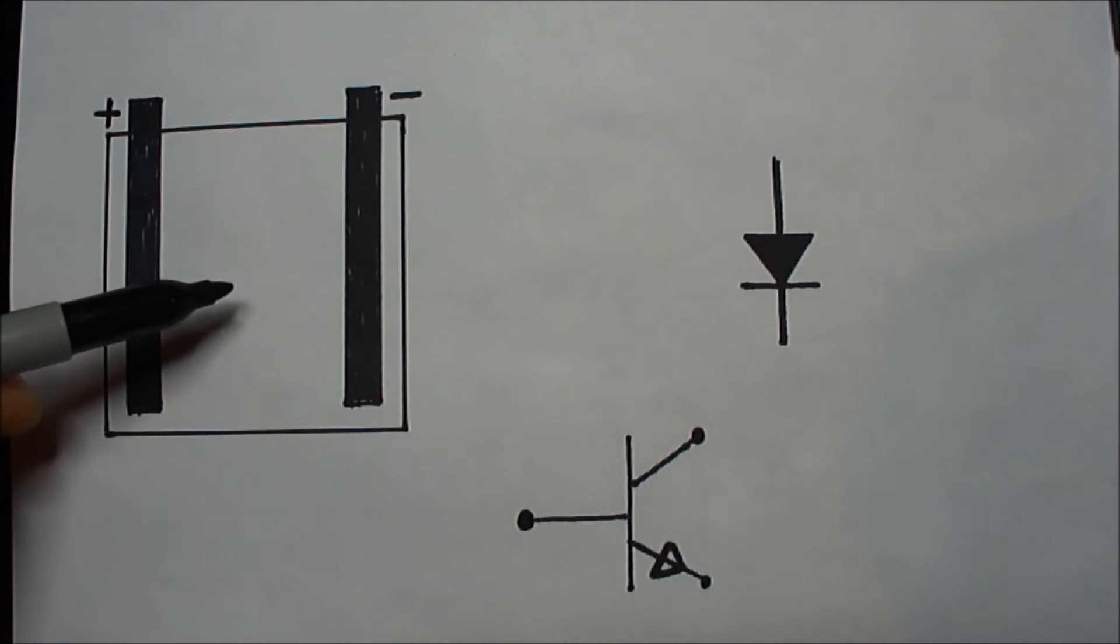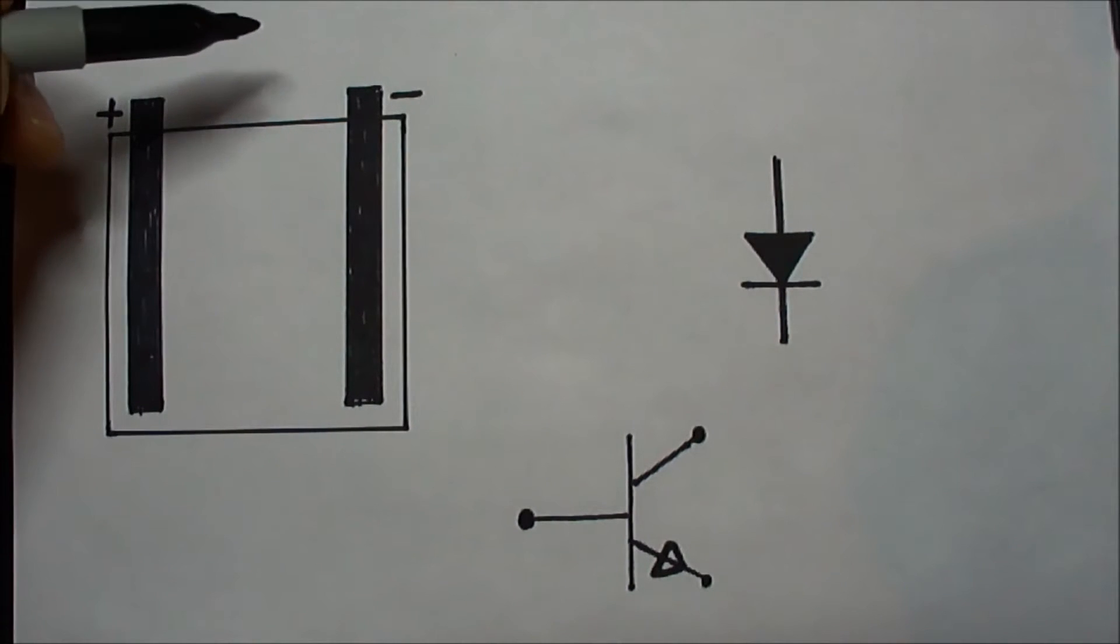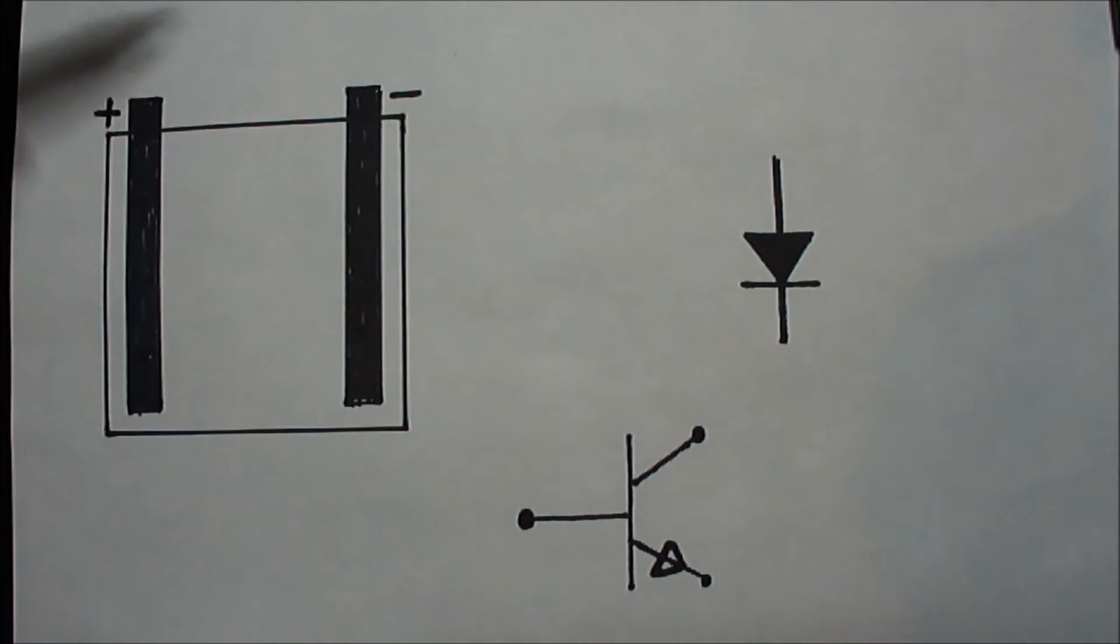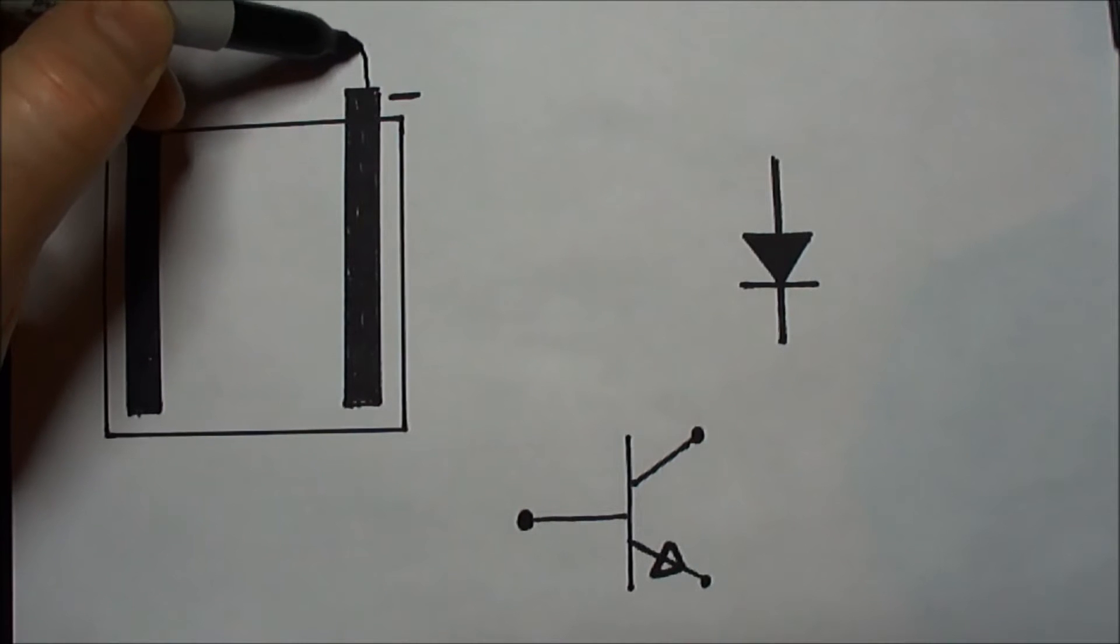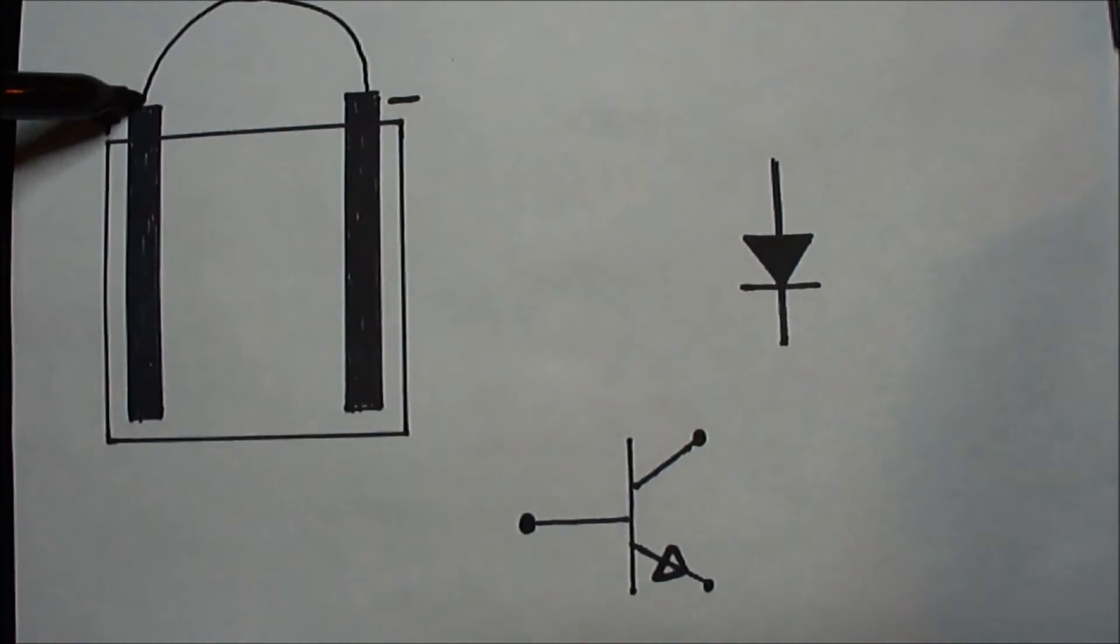Here we have a battery, and the electricity from the battery, when we're using it to power a circuit, flows from negative to positive.